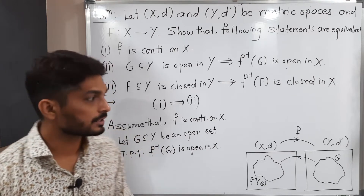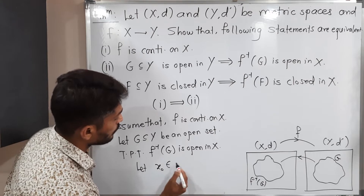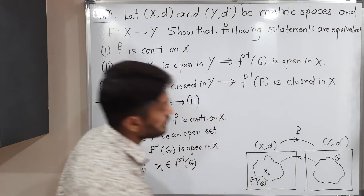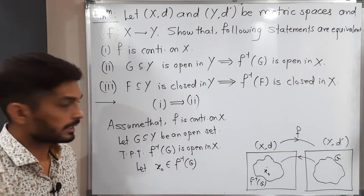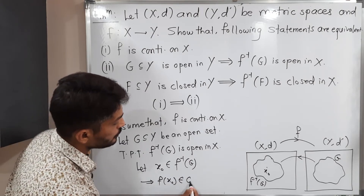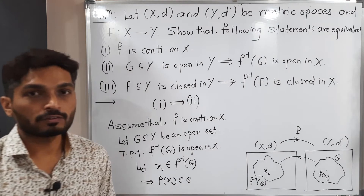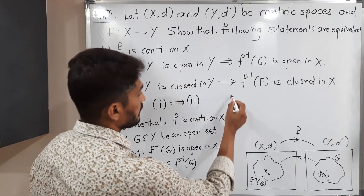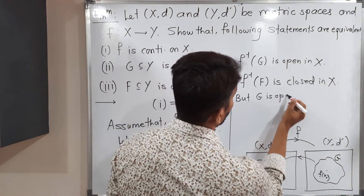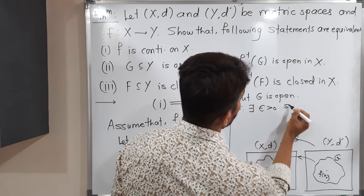To prove that any set is open, we take any arbitrary point and try to find a ball around it which entirely lies inside the set. Then we can say the set is open. Let us use this technique. Let x₀ belong to f inverse of G. Since x₀ belongs to this set, f(x₀) belongs to G. But we know that G is open.